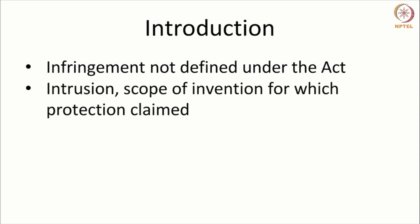Infringement can be understood as an intrusion into the scope of the invention for which protection is claimed. A patent specification is a techno-legal document which comprises technical information and also demarcates the limits of the right in a legal fashion. This part where the rights are demarcated is what we call the claims of a specification. The claims are the concluding part of the patent specification, and the patent specification shall end with the claims as per the Act. The claims contain the limits of the patent.